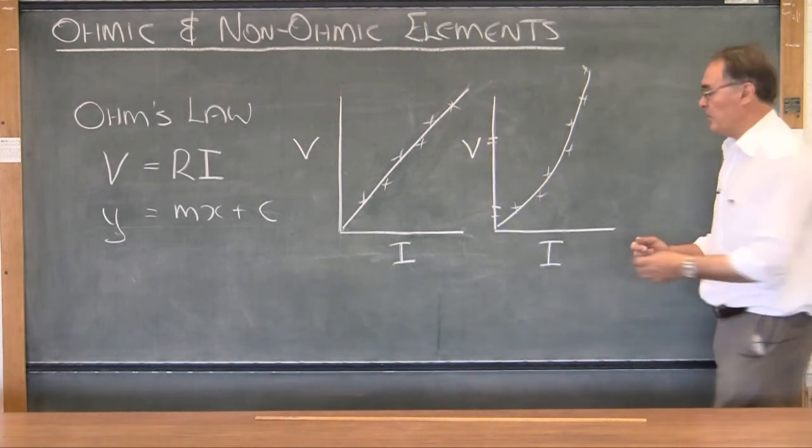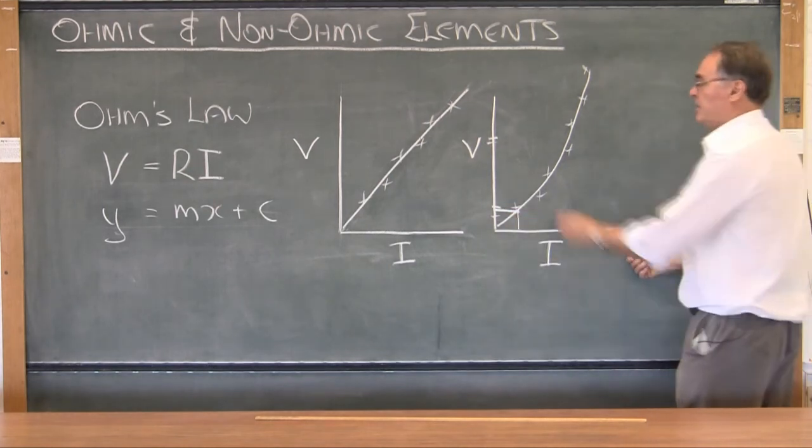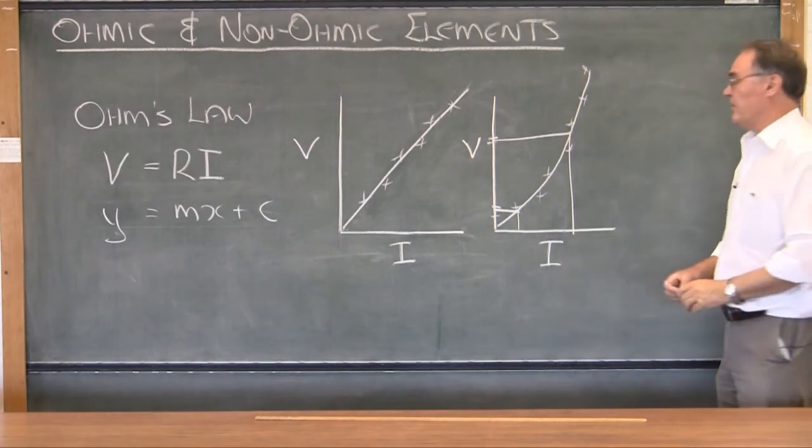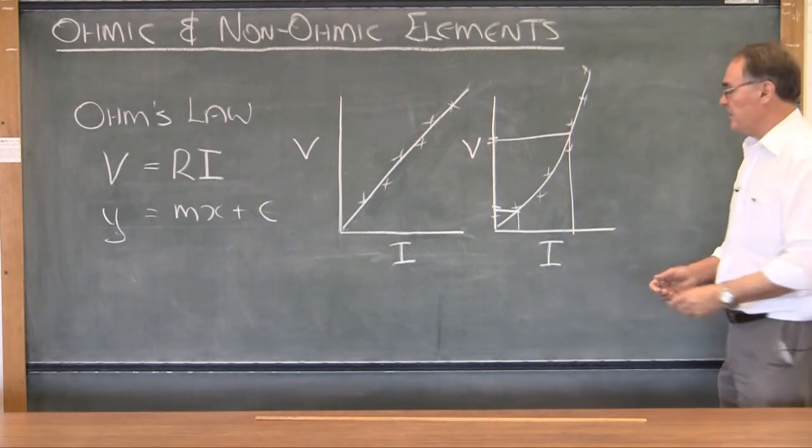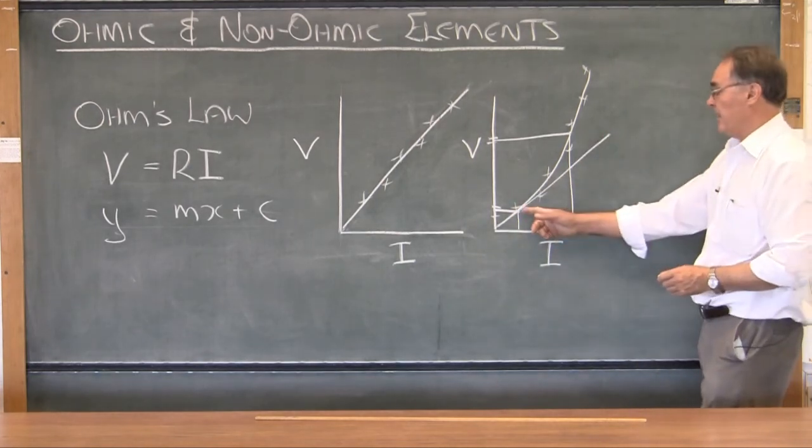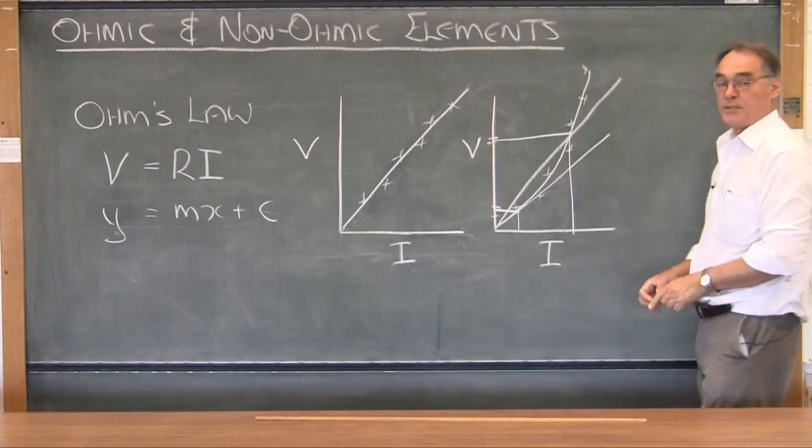What you need to do is to select a point, read the current and voltage at that point, read the current and voltage at this point, and then determine the resistance, or the equivalent resistance should I say, at that point and the equivalent resistance of this point.